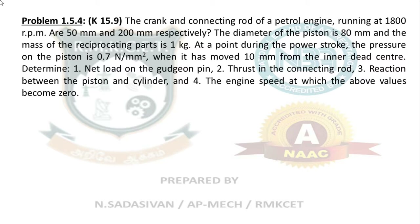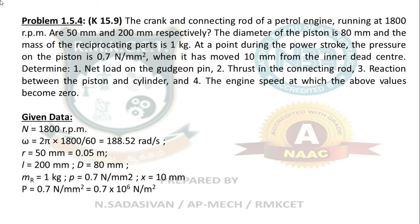This is a tricky question, so listen carefully. Given data: speed is 1800 RPM. Omega equals 2π into 1800 divided by 60, which gives 188.52 radians per second. Crank radius is 50 mm, which is 0.05 m. Length of the connecting rod is 200 mm, which is 0.2 m. Diameter of the piston equals diameter of the cylinder, capital D equals 80 mm.